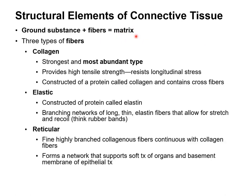What exactly are these thread-like or string-like fibers in the extracellular matrix? Here are the three types of fibers. The strongest one and what we see the most of is called collagen, because it provides strength and resists stress. Elastic fibers allow for stretch and recoil. Then there are reticular fibers, seen in a specific type of tissue, that branch and allow a framework of support for cells.